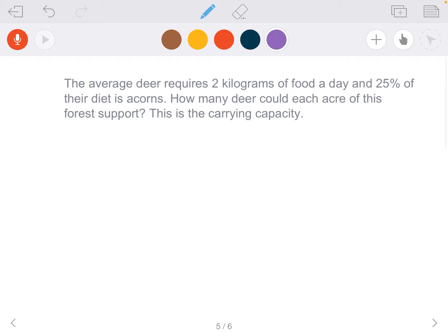Let's look at how much our water oaks can support a deer. The average deer requires 2 kilograms of food per day, and 25% of those 2 kilograms is made up of acorns. Our first step is determining just how many kilograms of acorns our deer needs to consume each day. So 0.25 times 2 kilograms gives us 0.5 kilograms. This is how many acorns per day our deer will need to consume.